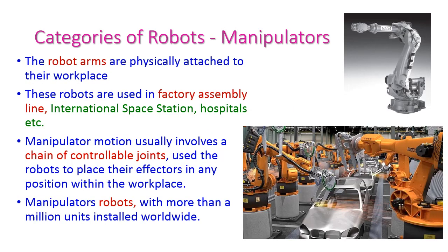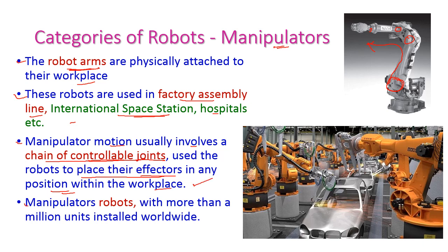The first category is manipulators. Robot arms are physically attached to their workspace, and using the arm the robot performs required tasks. These robots are used in factory assembly lines, the International Space Station, hospitals, and more. Manipulator motion usually involves a chain of controllable joints, which can be seen in diagrams showing many joints that allow movement anywhere within the workspace. These joints are used to place their effectors in any position within the workspace. More than one million manipulator robots are installed worldwide.